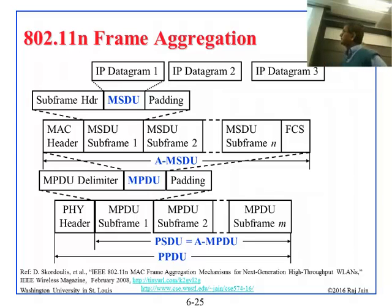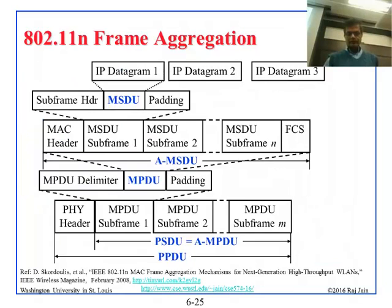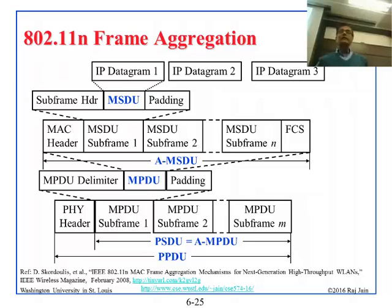An A-MPDU is an aggregated MPDU. If you go back, this would be an aggregated PPDU — this is the physical layer. This is how it works: there are headers and trailers for every little thing. And if you don't read that URL at the bottom, you won't get the complete picture. Most courses have textbooks — here you have to go back and read this. I made sure everywhere we have references and clickable URLs.